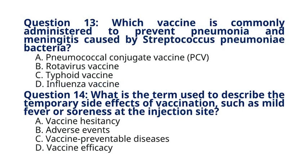Question 13. Which vaccine is commonly administered to prevent pneumonia and meningitis caused by Streptococcus pneumoniae bacteria? A. Pneumococcal conjugate vaccine, PCV. B. Rotavirus vaccine. C. Typhoid vaccine. D. Influenza vaccine. The correct answer to question 13 is option A, pneumococcal conjugate vaccine, PCV. The PCV is administered to prevent pneumonia, meningitis, and other diseases caused by Streptococcus pneumoniae bacteria.